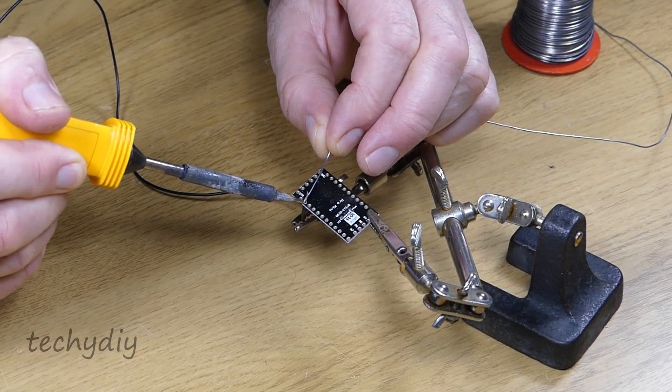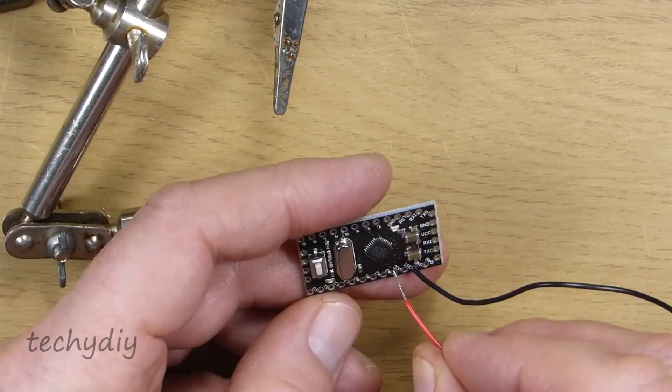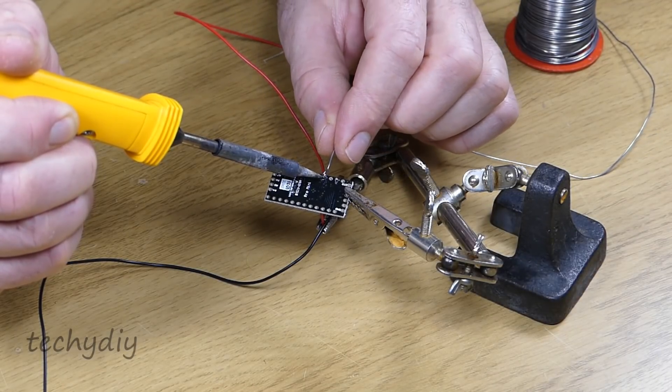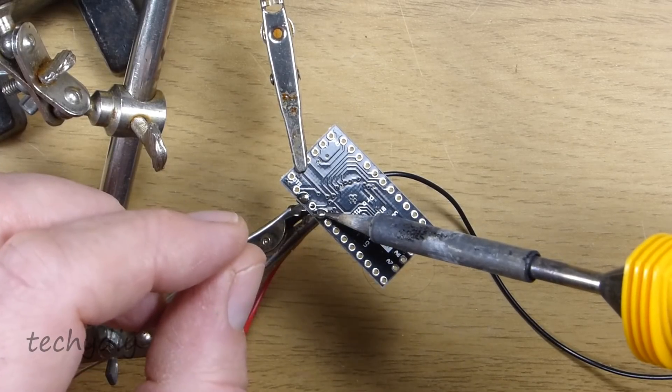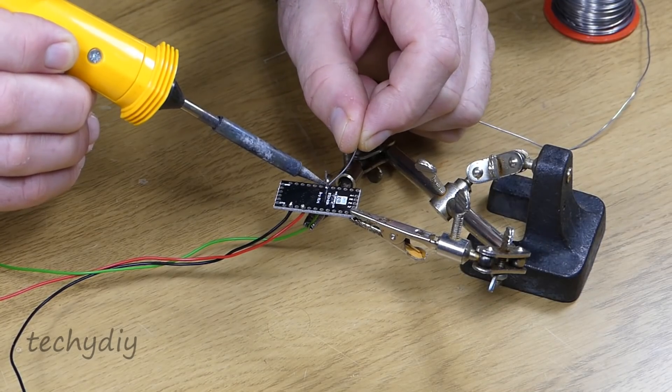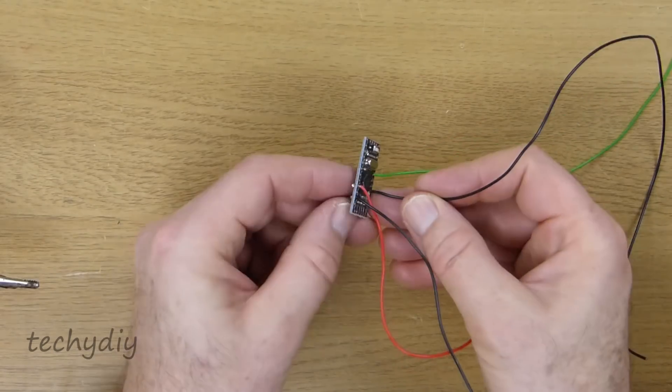So let's start off by soldering the wires to the Pro Mini with a black wire to the first ground pad and a red wire to the VCC pad. The wire that I'm using is flexible hook up wire with seven 0.2mm strands. Then a green wire is soldered to digital pin 4 or D4 and another black wire to the second ground pad.